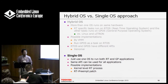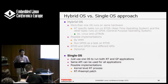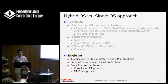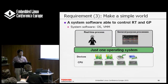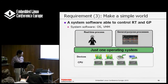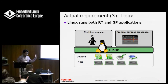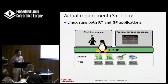The other approach is the single operating system approach. In this approach, we use just one operating system to run both real-time and general-purpose applications. The biggest advantage is we can use the same API to implement both applications — and that's what we want. If we want to use this with Linux, we can apply the real-time preemption patch to improve real-time performance.